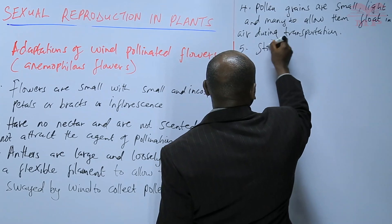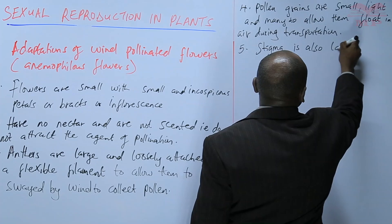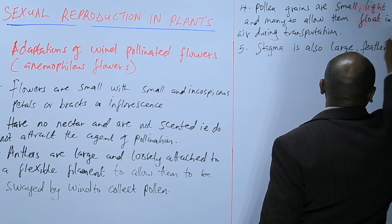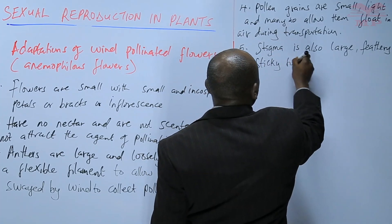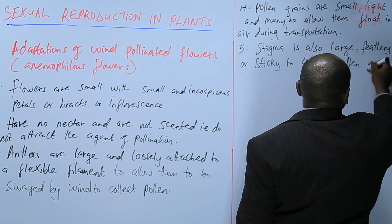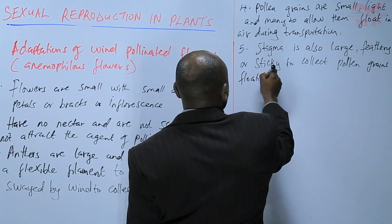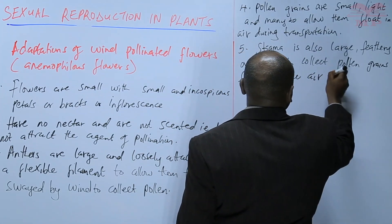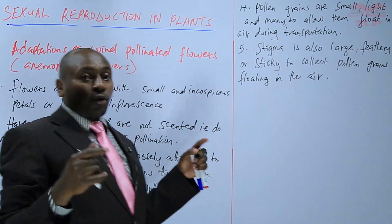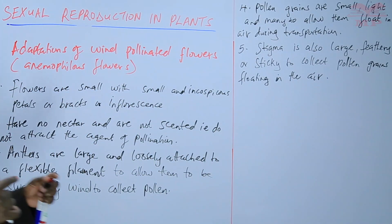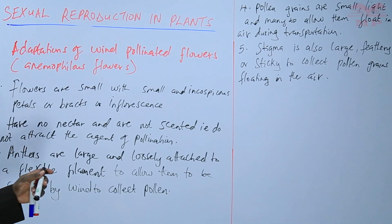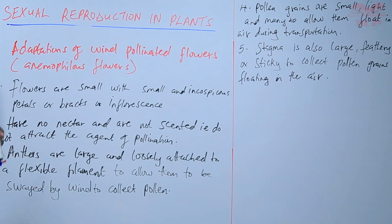The stigma is also large, feathery or sticky, to collect pollen grains floating in the air. Their stigmas are large and feathery, or some are sticky, so that once the pollen grains come into contact with them, they will stick and pollination will be enhanced. Those are some of the adaptations commonly found in wind-pollinated, or anemophilous, flowers.